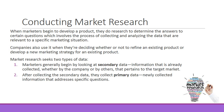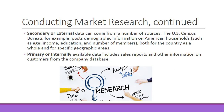The other kind is primary data — newly collected information that addresses the specific questions you are trying to answer. Secondary or external data can come from sources like the U.S. Census Bureau, which posts demographic information on American households: age, income, education, number of members, both for the country as a whole and specific geographic regions. Primary or internally available data comes from your own company and includes sales reports and other customer information from the company database.